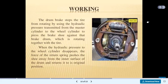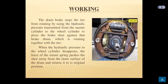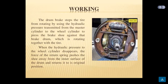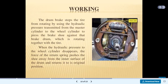Observing the working principle: the drum brake stops the tire from rotating by using the hydraulic pressure transmitted from the master cylinder to the wheel cylinder, to press the brake shoe against the rotating brake drum. When the hydraulic pressure to the wheel cylinder disappears, the force of the return spring pushes the shoe away from the inner surface of the drum and returns it to its original position.